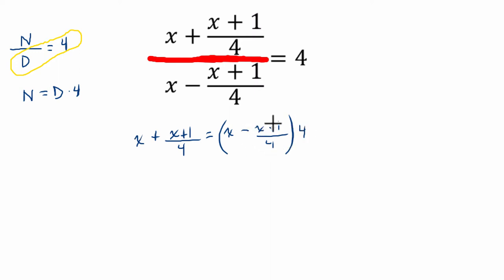So I notice on the right-hand side here, I could distribute 4. 4 times x is 4x. And then 4 divided by 4 is 1, so it's just minus x minus 1. I distributed that negative sign.